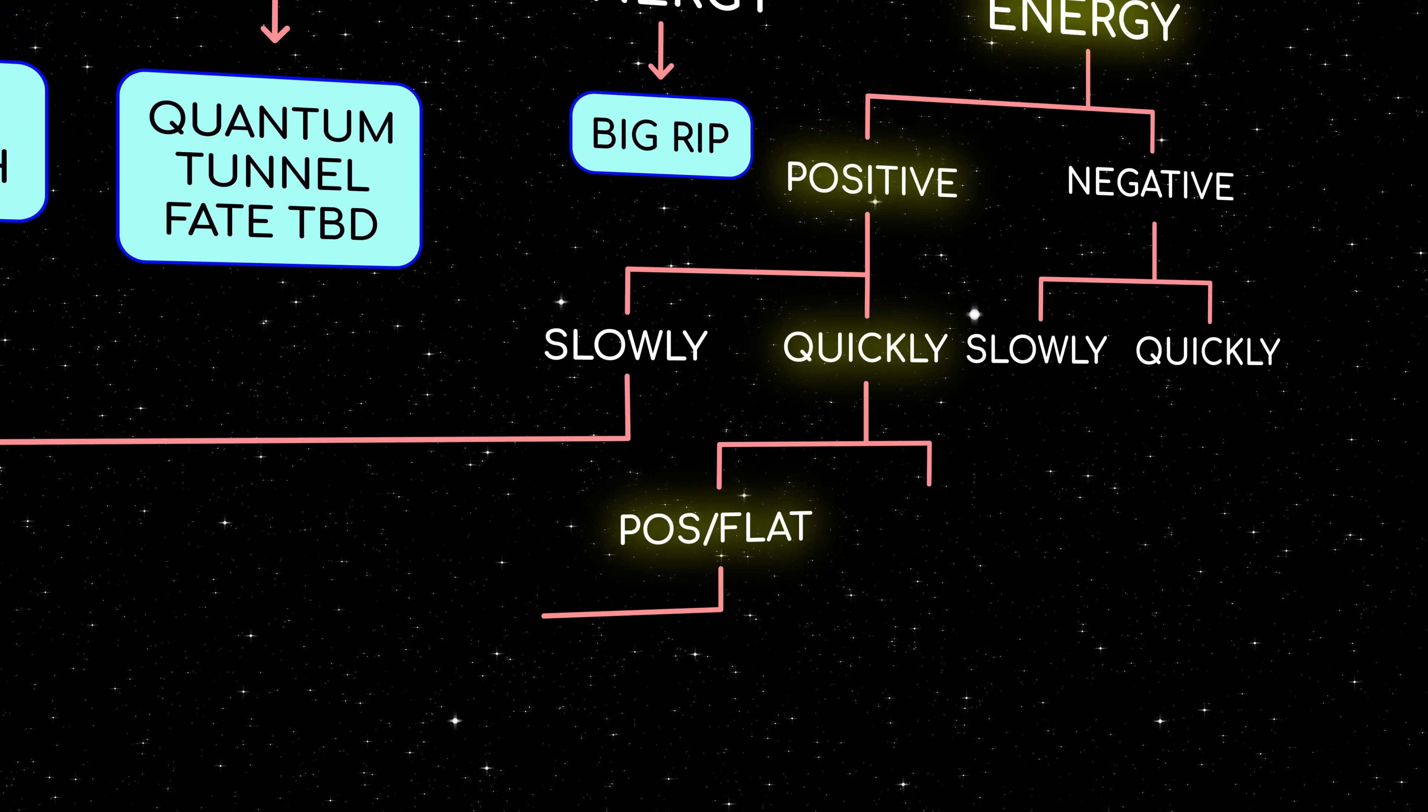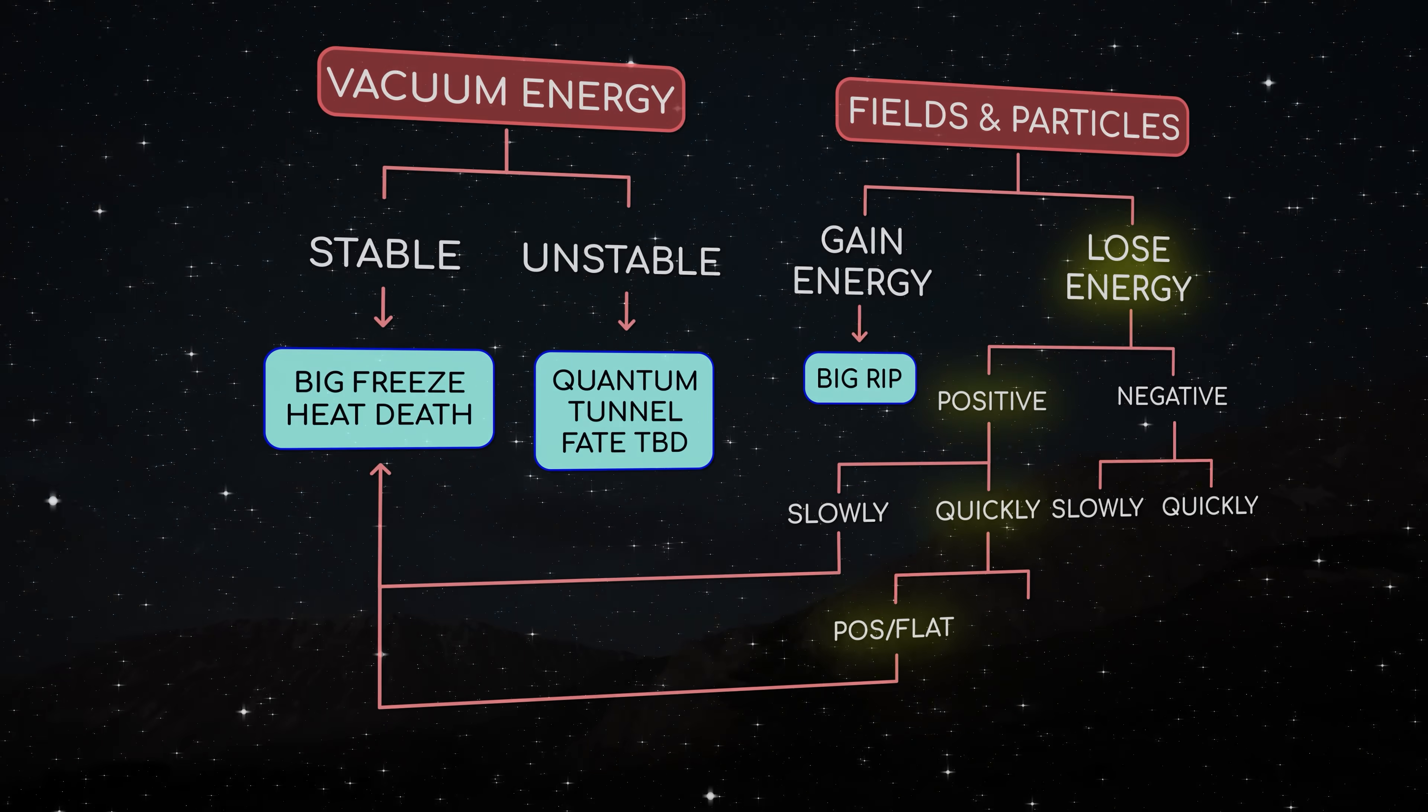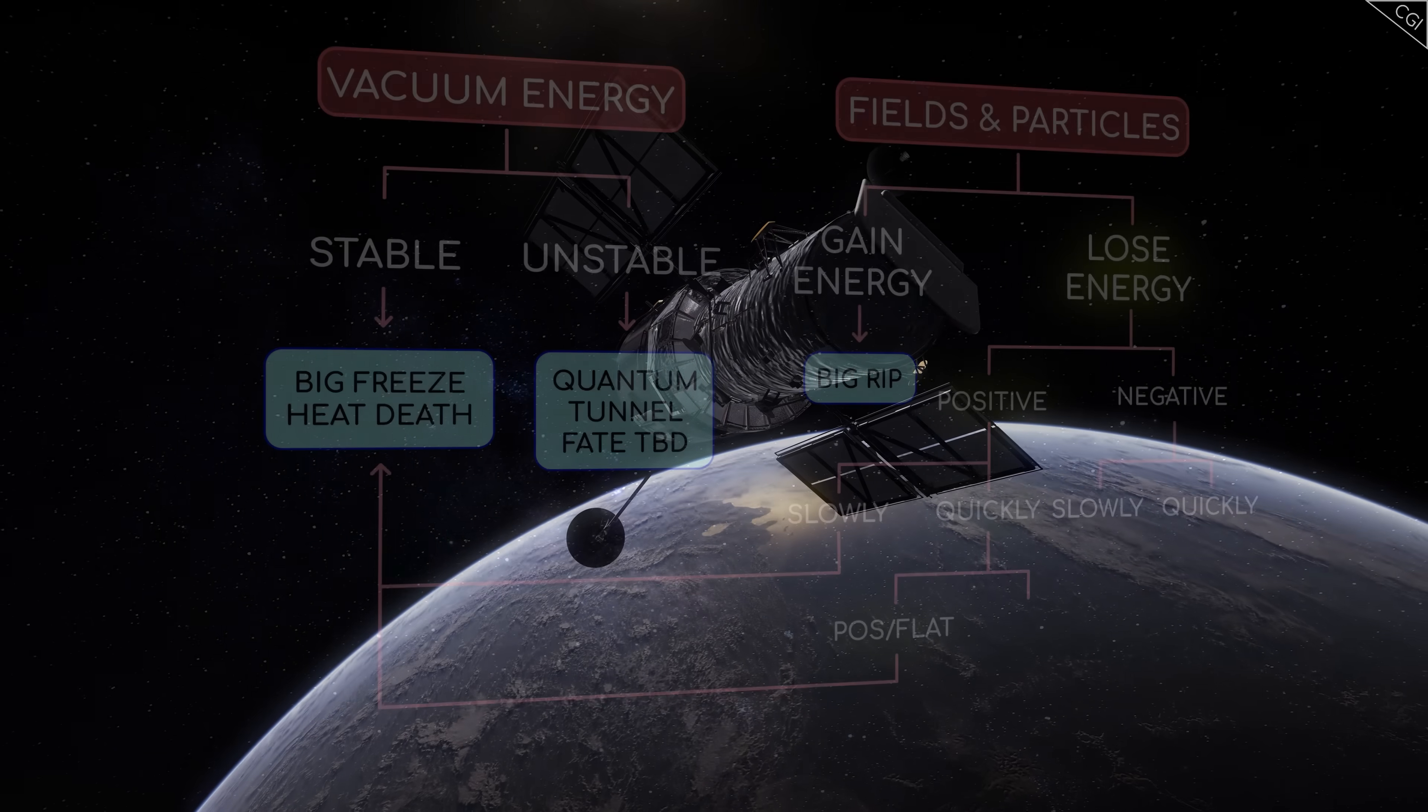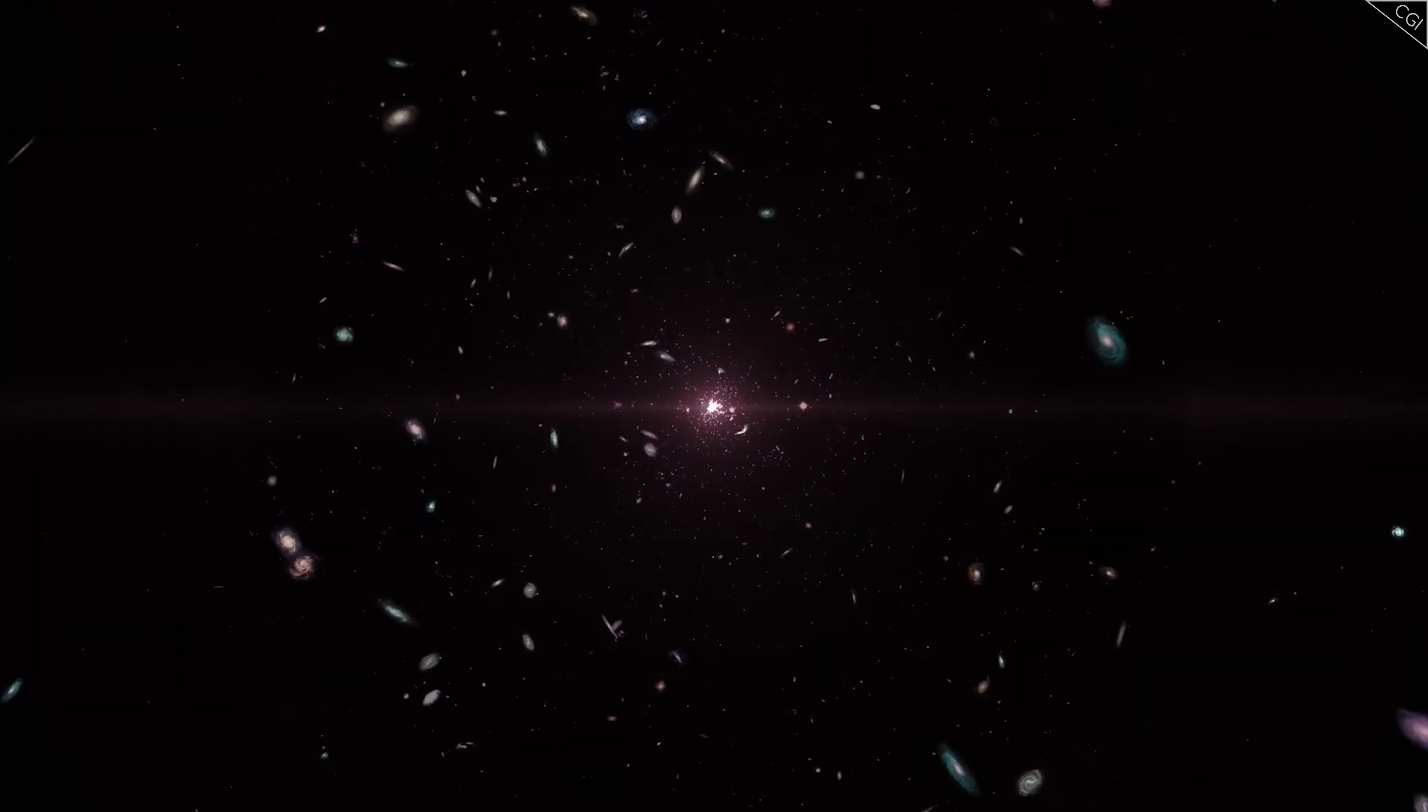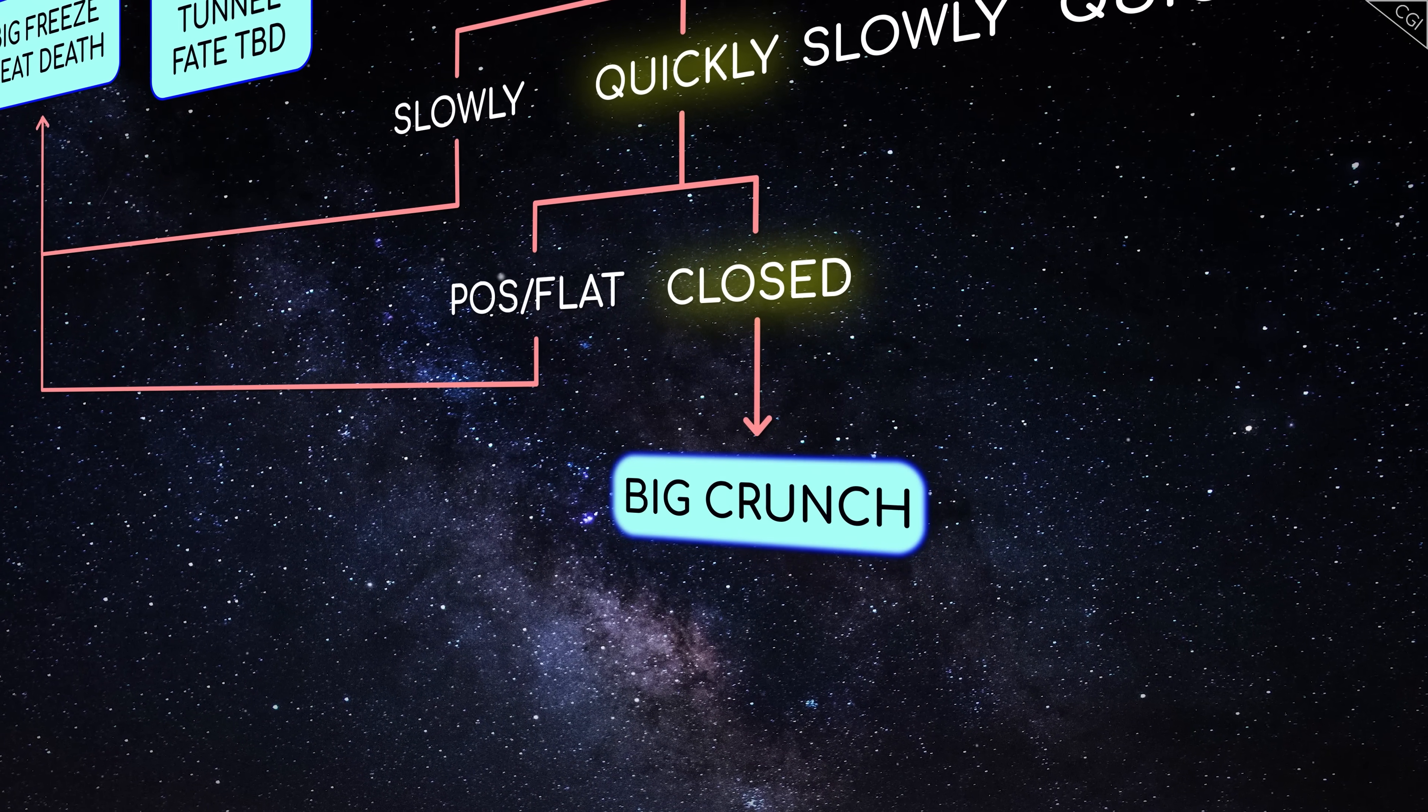A flat or open universe would eventually evolve towards heat death, but there would be no cosmic event horizon to prevent us from communicating with galaxies as far as the eye can see. This may be the most peaceful of all the possible futures for the universe. On the other hand, a closed universe would eventually stop expanding, reverse course, and collapse back in on itself, which sounds less peaceful. This kind of re-collapse is known as a big crunch.